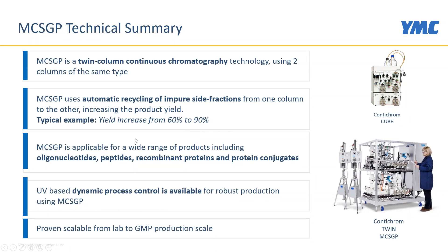MCSGP is applicable for a wide range of products, including oligonucleotides, peptides, recombinant proteins, and protein conjugates. It is particularly useful when purifying product from product-related impurities, and is especially effective for products produced by chemical synthesis. We also have UV-based dynamic process control available for robust operation. MCSGP has been scaled up from lab to GMP production scale — on the right-hand side you can see equipment at these two sizes.